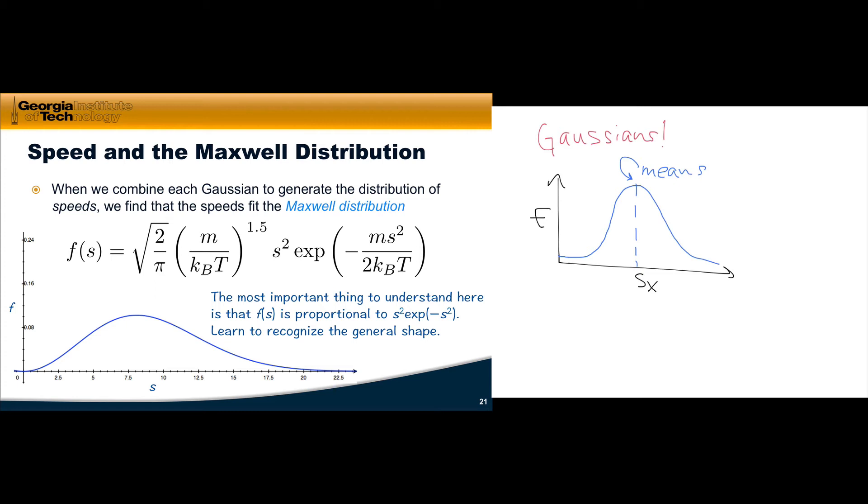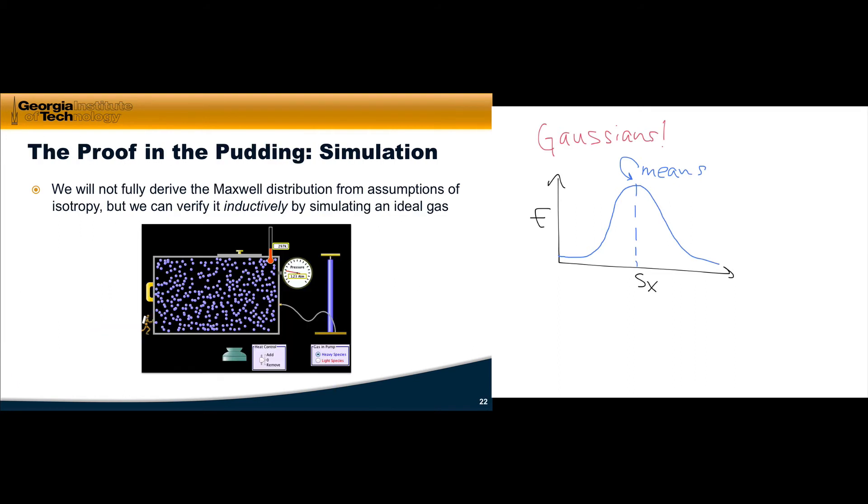The general shape is shown for you here in blue. It starts out low, which makes sense—the particles are all moving to some degree—goes up to a peak, here it's right around 8 or so, and then decays as we go farther out. So there are fewer molecules with very high velocity and few molecules with very low velocity. We're not going to fully derive the Maxwell distribution, but I do want to show you that it actually shows up when we simulate an ideal gas. So I want to turn our attention now to simulating an ideal gas using the simulation shown here.